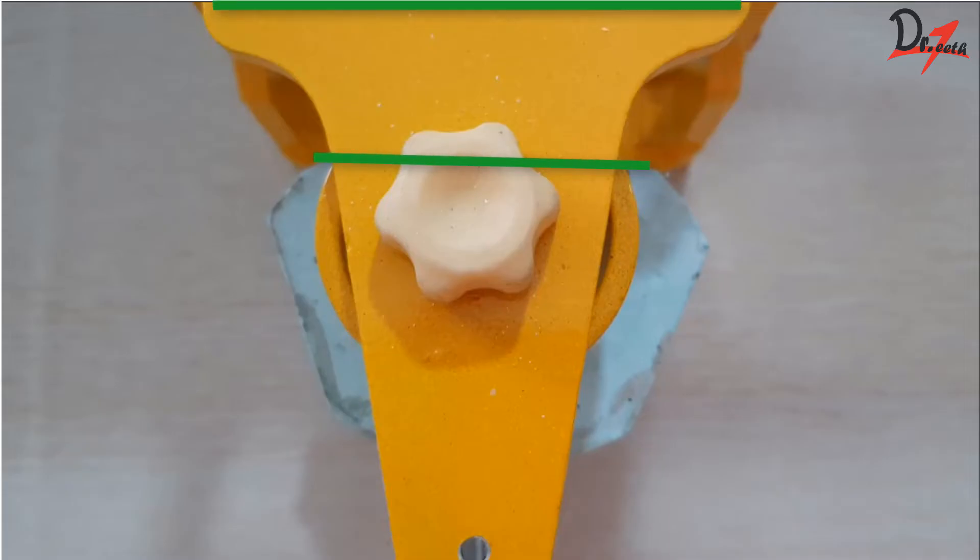Checking this is very important or sometimes we tend to rotate the cast on one side. So, this will create problem in teeth setting. So, make sure you check from the superior surface also.